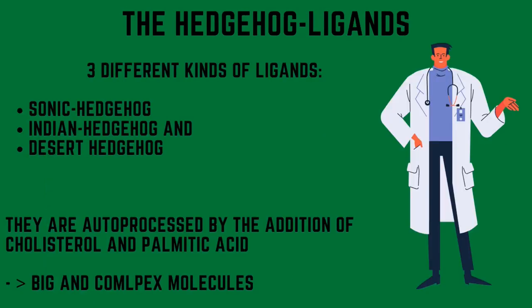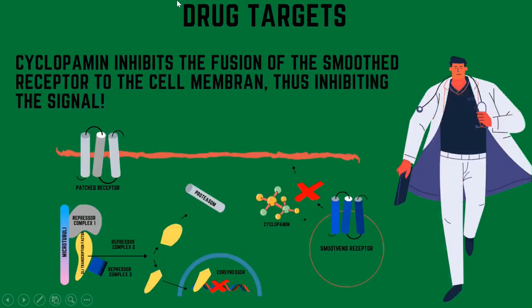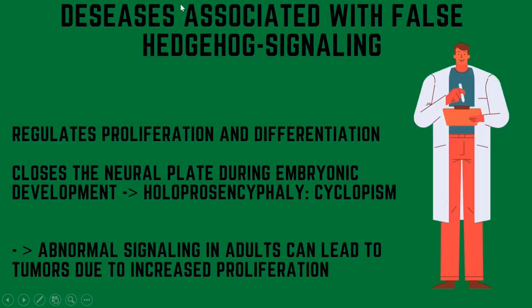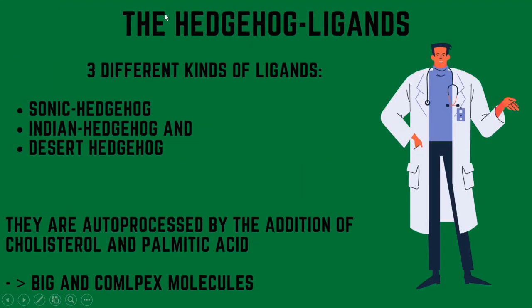The hedgehog ligands — there are three different ligands: sonic hedgehog, Indian hedgehog, and desert hedgehog. They are auto-processed by the addition of cholesterol and palmitic acid, which means that they are big and complex molecules.